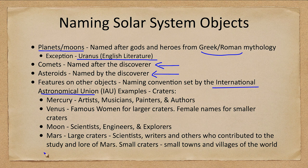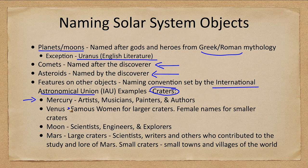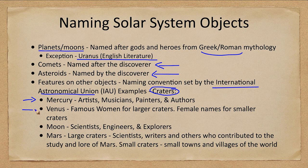How about features? Naming features, let's look at some of the craters. How do we name craters? Well, it depends on where the crater is found. On Mercury, they are named after artists, musicians, painters and authors. On Venus, famous women for larger craters and female names for smaller craters.